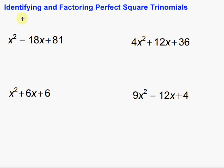Well, a perfect square trinomial is something that looks like this, where we have a squared plus 2ab plus b squared, or we could have a squared minus 2ab plus b squared.